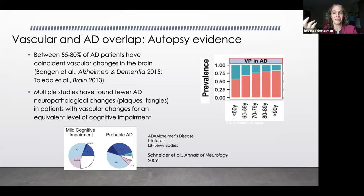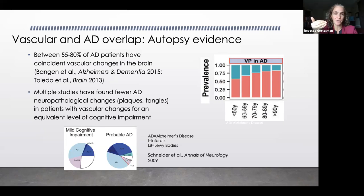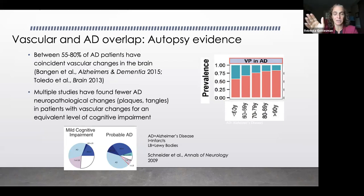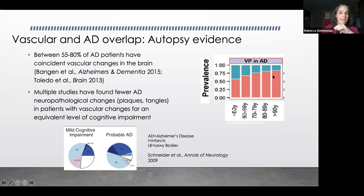In addition to the biological evidence, we know from autopsy studies that there's a huge amount of overlap between AD and vascular pathologies. Most patients diagnosed with Alzheimer's disease have some coexistent vascular changes in the brain. In important studies from Rush MAP led by Julie Schneider and colleagues, they looked at people who had a clinical diagnosis of MCI or probable Alzheimer's disease before they died and found that a relatively small proportion had pure AD pathology. It's very common for people to have mixed pathology — including infarcts and other pathologies — going up with age, with some kind of vascular pathology in people who have Alzheimer's disease. Therefore, we really need to think about both mechanisms when thinking about preventing dementia.